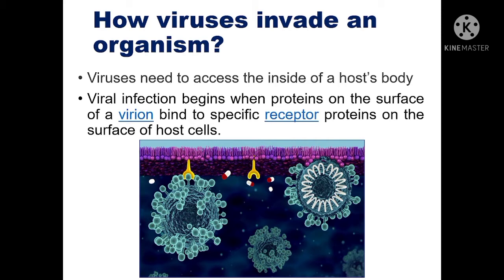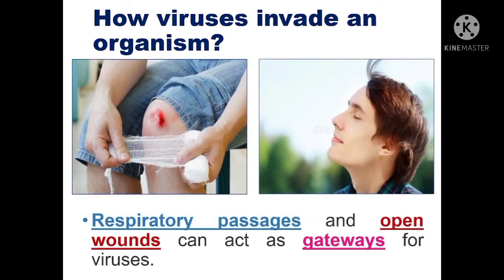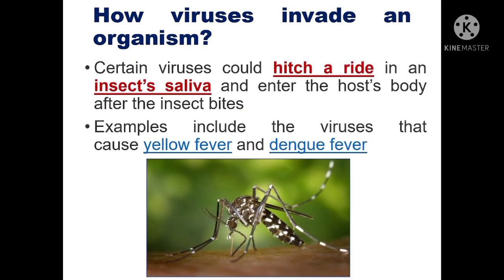How do viruses invade an organism? Viruses need to access the inside of a host's body. Viral infection begins when proteins on the surface of a virion bind to specific receptor proteins on the surface of host cells. Viruses can also enter through respiratory passages and open wounds, which can act as gateways. Certain viruses can hitch a ride in an insect's saliva — for example, mosquito saliva infected with viruses that cause yellow fever and dengue fever.